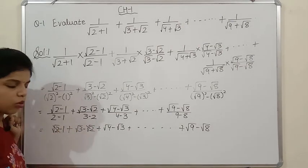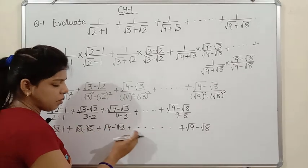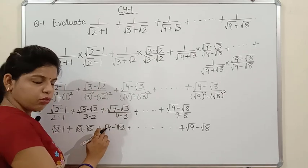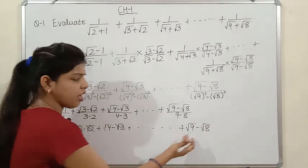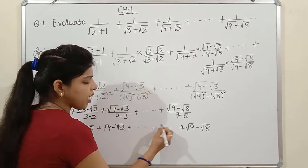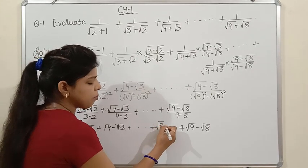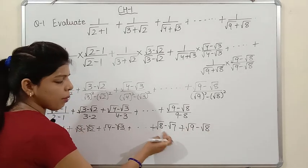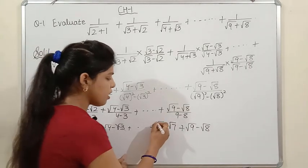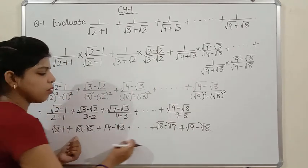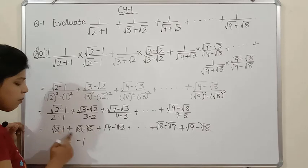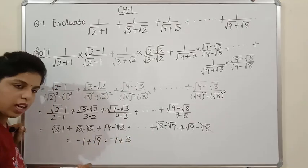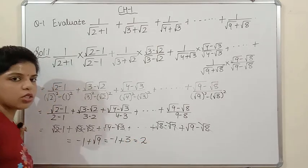√2 and -√2 cancel, √3 and -√3 cancel. Many intermediate terms cancel. Before √9-√8, we would have had √8-√7, which also cancels. So all middle terms cancel telescopically. What remains is √9 - 1. √9 equals 3 because 3²=9. So the answer is 3 - 1 = 2.